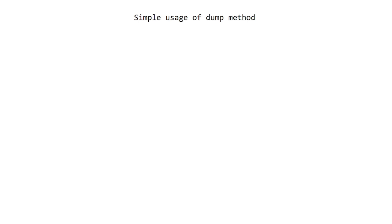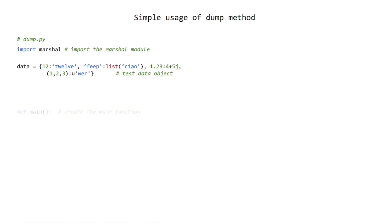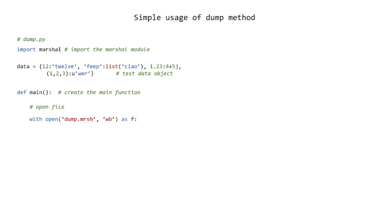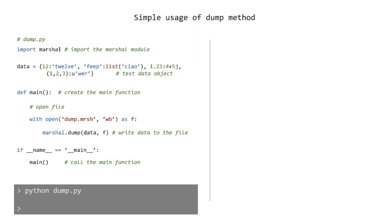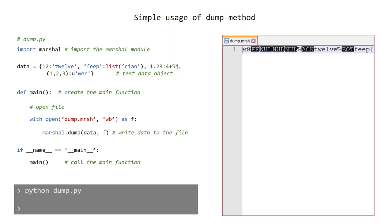Simple usage of the dump method. Create a dump.py file. Import the Marshall module. Add a test data object. Create the main function. Open the file in write binary mode. Write data to the file. Call the main function. Run in terminal and see the results.